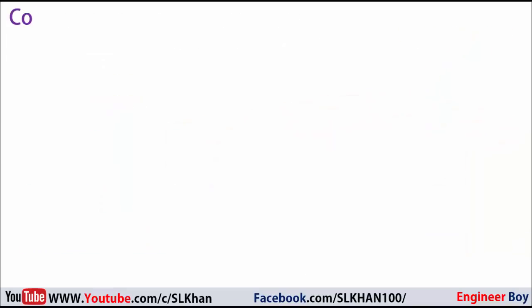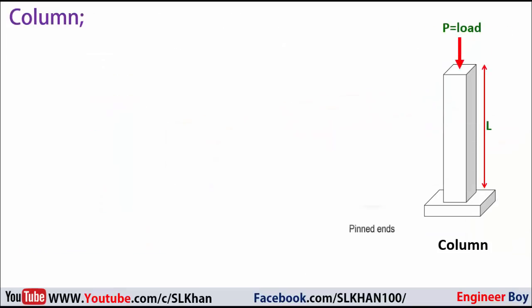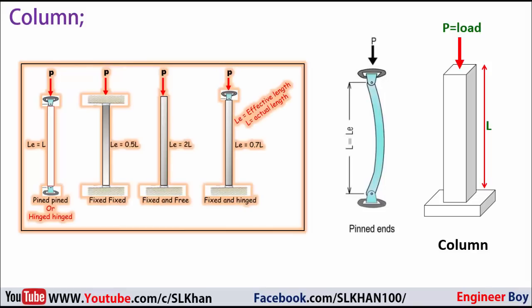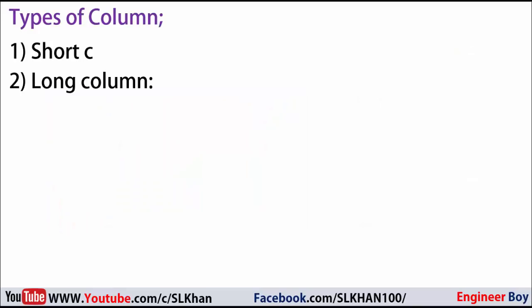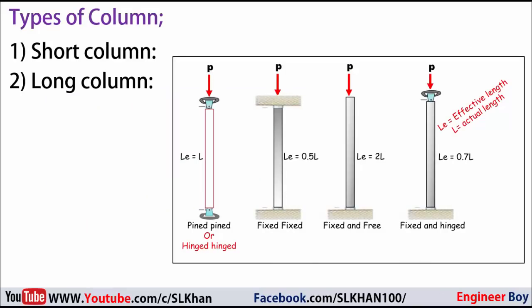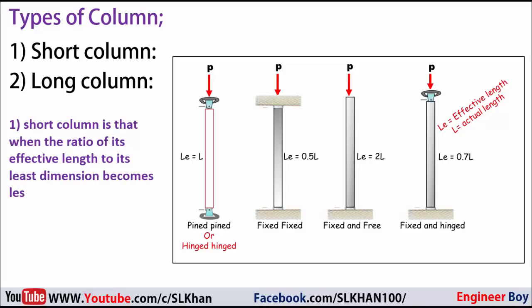Now let's move on to columns. Columns are normally vertical members which resist axial compressive loads. Columns are subjected to both axial loads and bending moment as well. Columns are classified into two types: long columns and short columns. A short column is defined when the ratio of its effective length to its least dimension is less than or equal to 12.